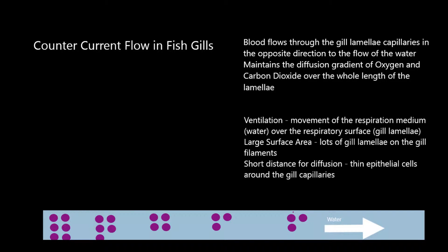Let's talk about counter-current flow in fish gills. The principle is that blood flows through the gill lamellae capillaries in the opposite direction to the flow of water. The purpose of this is it maintains a diffusion gradient of oxygen and carbon dioxide over the whole length of the gill lamellae. This is an extremely clever mechanism and produces extremely efficient diffusion. This follows the principles of efficient gas exchange: you ventilate the respiratory surface, moving the respiratory medium — in this case water — over the respiratory surface, which is the gill lamellae.